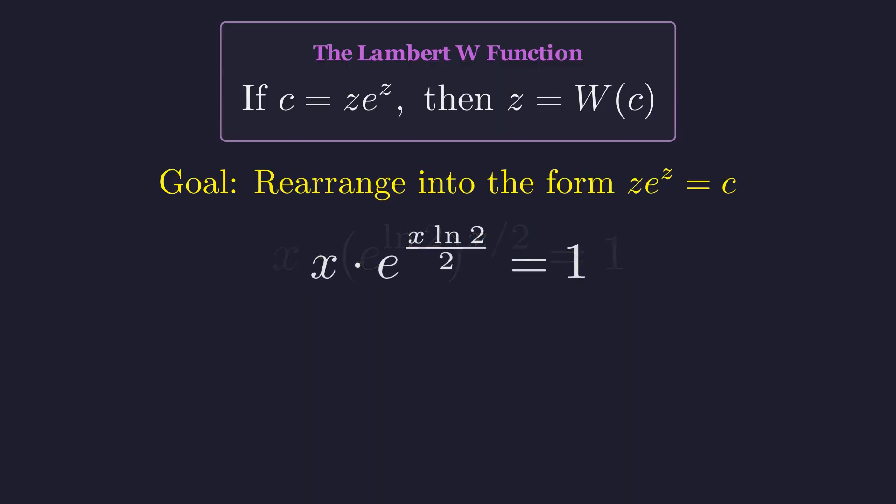Using exponent rules, we combine the powers. We are very close. The term in the exponent must match the coefficient in front. We can achieve this by multiplying both sides by the constant natural log of 2 over 2.